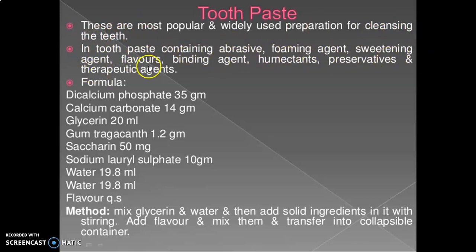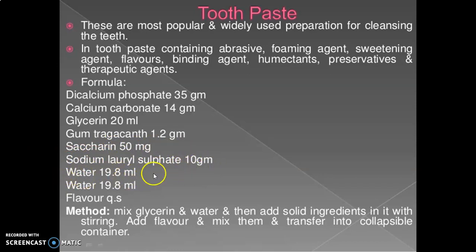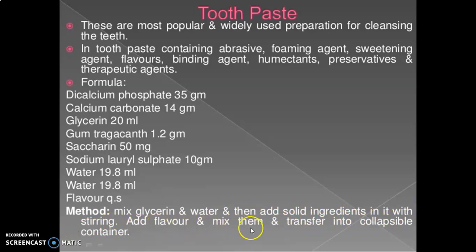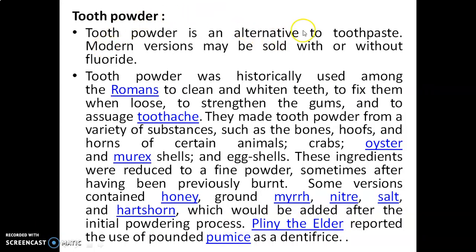Toothpaste formula: dicalcium phosphate 35 g, calcium carbonate 14 g, glycerine 20 mL, gum tragacanth 1.2 g, saccharine 50 g, sodium lauryl sulfate (SLS) 10 g, water 19.8 mL, flavor quantity sufficient. Method: mix glycerine and water, then add solid ingredients with stirring, add flavor and mix, then transfer into a collapsible container.